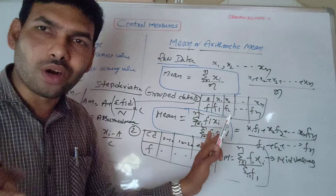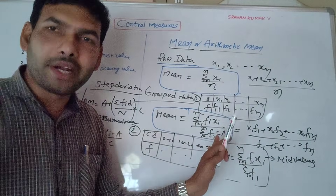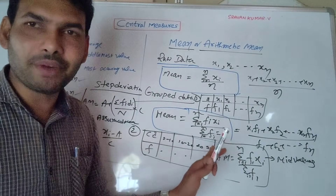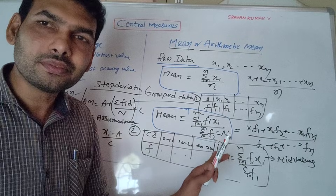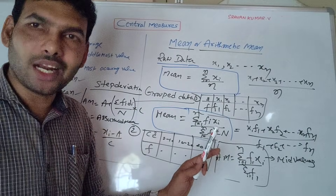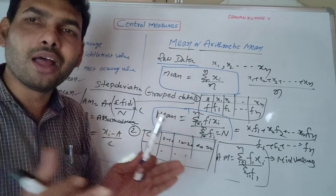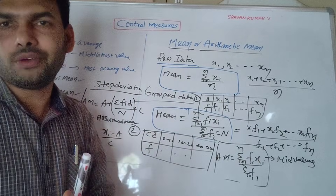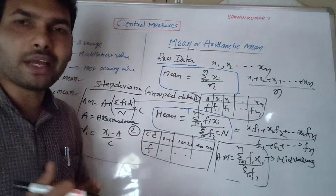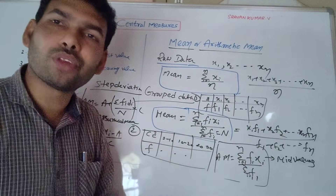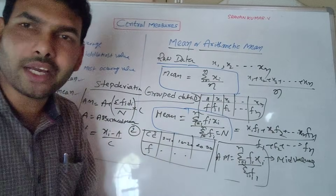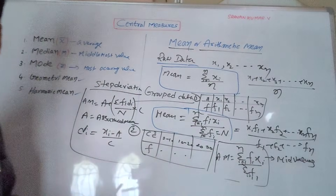In the next part, we will discuss mean in detail, then move on to median — including ungrouped data formula and grouped data formula — then mode, geometric mean, and harmonic mean. Each topic will be discussed clearly. Next, we will solve arithmetic mean problems. Thank you.